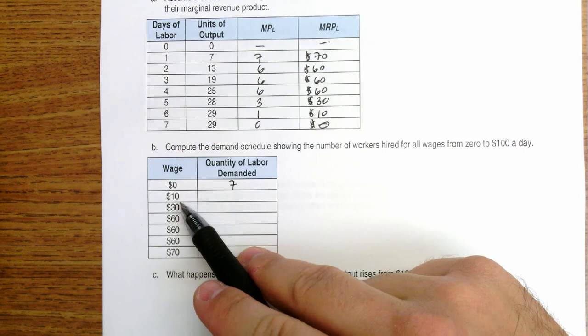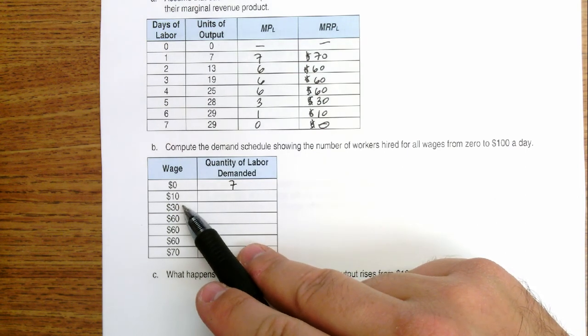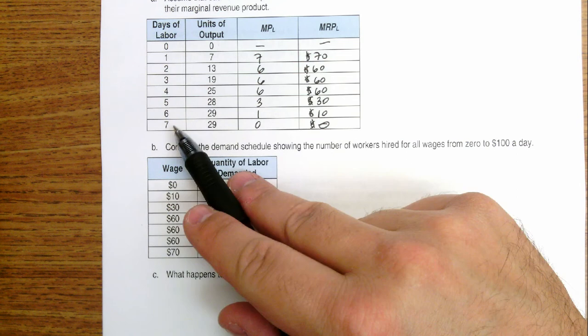If the wage rate is 10, how many people would I hire, or how many people would it take to get to a point where marginal revenue product was also equal to 10? That would be six workers.